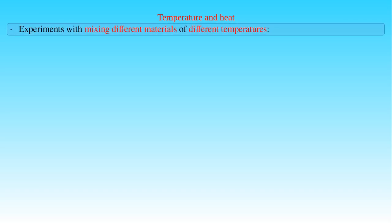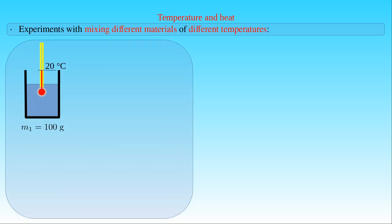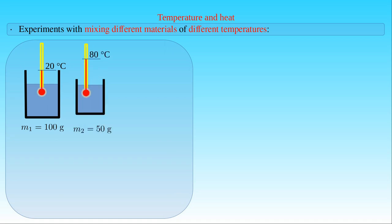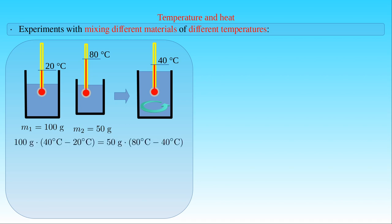Let us pour water with a temperature of 20 degrees Celsius into a container until its mass reaches 100 grams. Let us also heat 50 grams of water to 80 degrees Celsius and pour it into the container filled with cold water. If we mix the cold and the hot water and measure the temperature of the mixture, we see that it goes up to 40 degrees Celsius. Then we can write the following equation: 100 grams times (40 minus 20) degrees Celsius equals 50 grams times (80 minus 40) degrees Celsius.